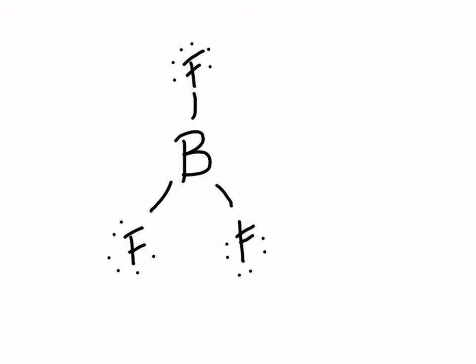Let's look at another example: BF3. Again, it's how many valence electrons something should have minus how many it actually owns in the structure. Boron should have three; in the structure it owns one, two, three — so boron has a formal charge of zero. Each fluorine owns one, two, three, four, five, six, seven, and it should own seven, so each fluorine also has a formal charge of zero. All zeros add up to zero, which matches the neutral molecule.